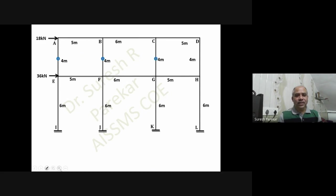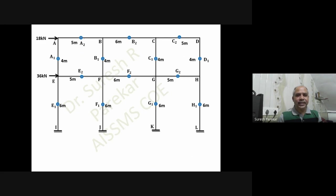The first assumption is that mid-height of the column is an inflection point and mid-span of the beam is also an inflection point. These are all the inflection points for both floors. We will now consider each portion separately — A1, A2, then A2B1, B2, and so on — labeling them as T and L. We will go joint by joint: first joint A, then joint B, then C, D, E, F, G, H.